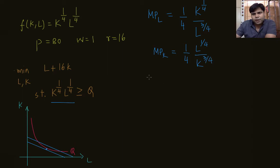To find the MRTS, which is the slope, we want to get MPL by MPK, which equals k by l. And the slope of the isocost line is 1 by 16, which is w by r, equal to 1 by 16.